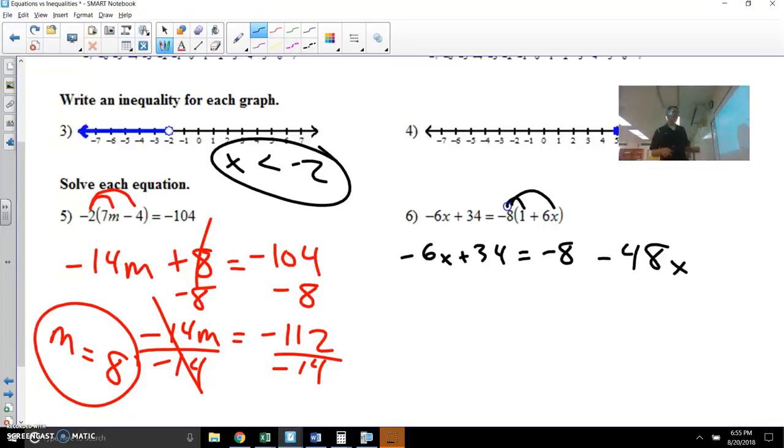So now I've got like terms on the left and the right. I need to probably think about adding 48x over here because I want to keep things positive. If I was to add 6 to this side, it wouldn't make that positive. You don't have to do it that way, but it does make the problem slightly easier. So 48 minus 6 is 42. Let's go ahead and say that's plus 34 equals negative 8.